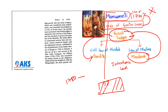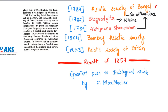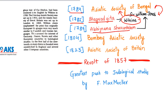The Asiatic Society of Bengal was established by Sir William Jones in 1784. Another founder member was Wilkins. In 1785, the year after the Society's establishment, Wilkins translated what Hindus consider their most authoritative text — the Bhagavad Gita — into English. Sir William Jones also translated Abhigyana Shakuntalam, written by Kalidasa, into English in 1789.